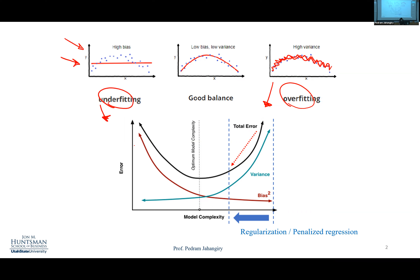The idea of regularization — also called penalized regression — is very simple: we want to reduce the complexity of the model. As we reduce complexity, bias is going to increase a little bit. But we hope that this small amount of added bias will be balanced by a large reduction in variance.